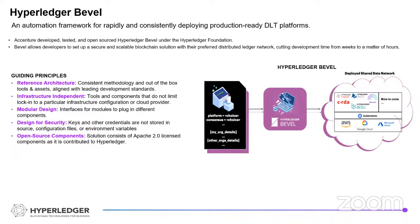The Bevel solution is designed for security, using best key management practices. None of the keys or credentials are stored in the source or configuration file. It is open-sourced under the Apache 2.0 license and contributed to Hyperledger.